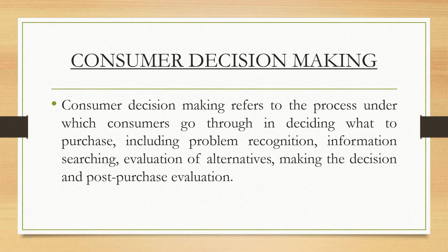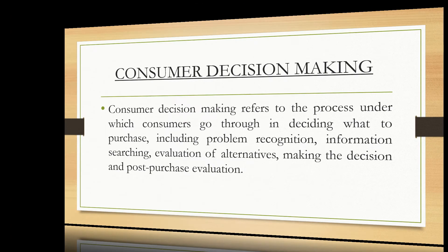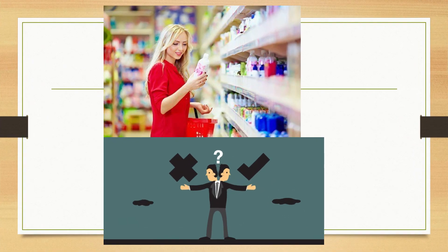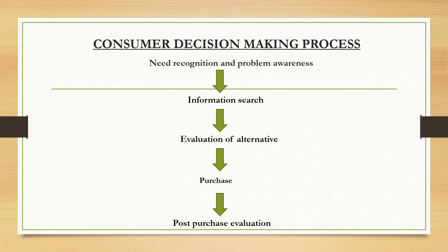Consumer decision-making process — the main topic we are all going to discuss. Consumer decision-making refers to the process under which consumers go through in deciding what to purchase, including problem recognition, information search, evaluation of alternatives, making the decision, and post-purchase evaluation. This is a flowchart of the consumer decision-making process: it starts with need recognition and problem awareness, then information search, evaluation of alternatives, purchase, and post-purchase evaluation.